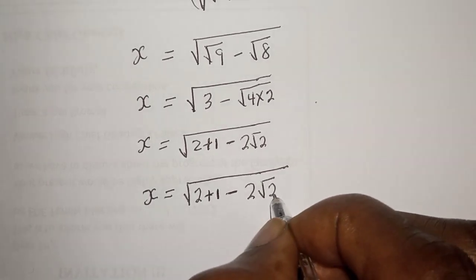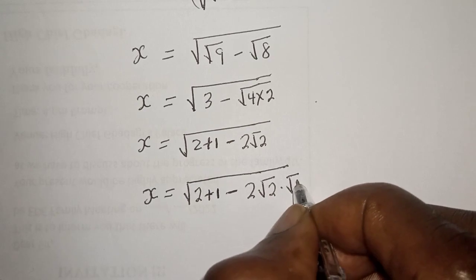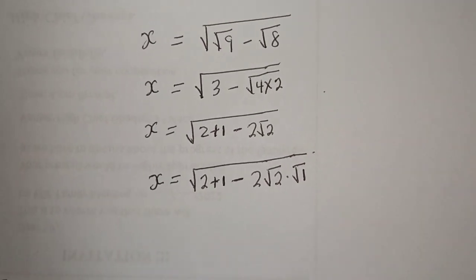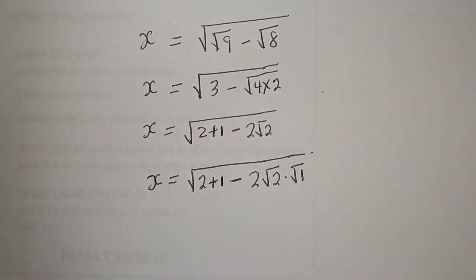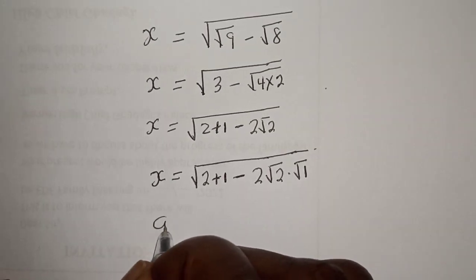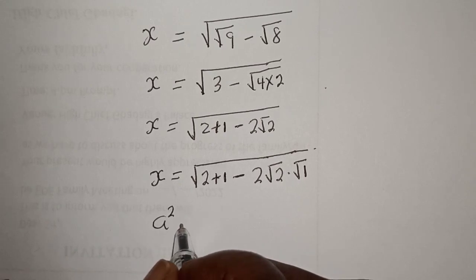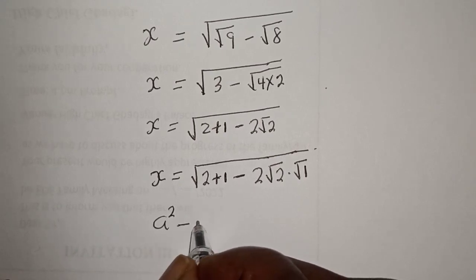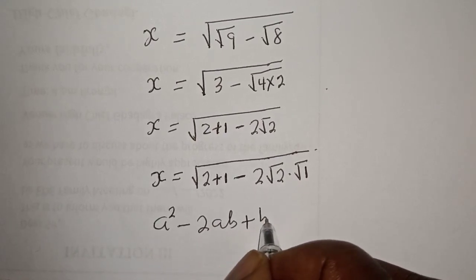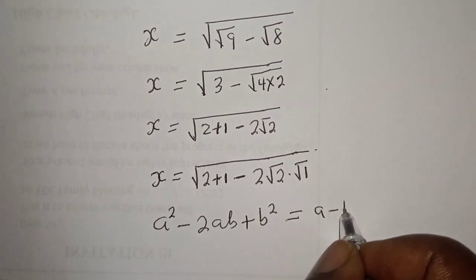Note that inside we have: root 2 multiplied by root 2, multiplied by root 1. Take note of this rule: if you have a squared minus 2ab plus b squared, this is equal to a minus b, all squared.